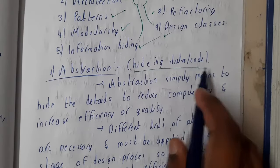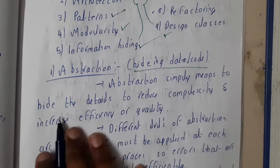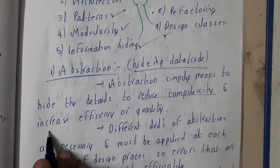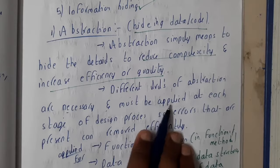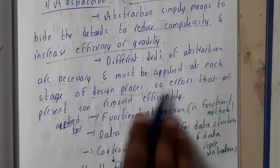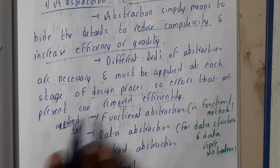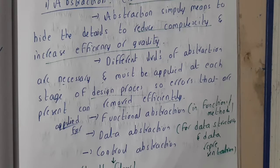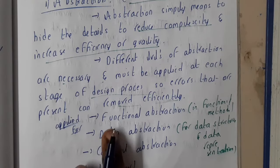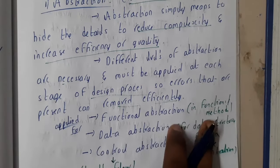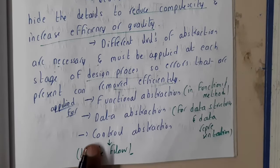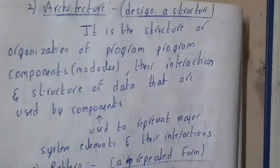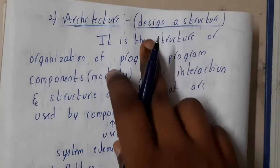Simply, abstraction means hiding of code or data — to hide the details, to reduce the complexity, and to increase the efficiency or quality. Different levels of abstraction are necessary and must be applied at each stage of the design process so that errors can be removed efficiently. Abstraction is applied for functional abstraction in functional methods, data abstraction for representing data structures, and control abstraction for the flow of data.